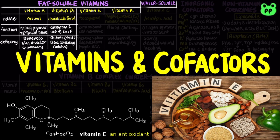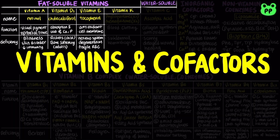Vitamin E is the collective name for a group of closely related lipids called tocopherols, which function as antioxidants and components of the cell membrane. Vitamin E deficiency in humans is very rare. The principal symptom is nervous system degeneration or fragile erythrocytes, or red blood cells.